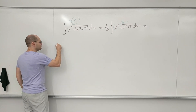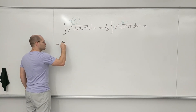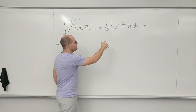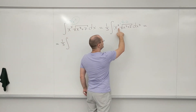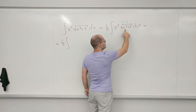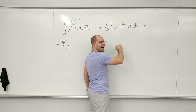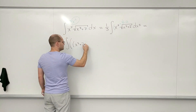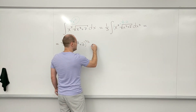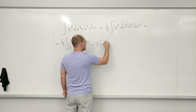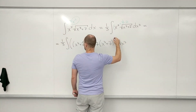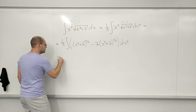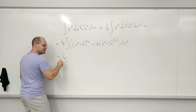So this is what I have. I now have one-third times the integral, and we'll combine it into a single power because this is (x^3 + 7) to the power 3/2, minus 7. The rest is pretty straightforward. Let's keep the one-third outside.